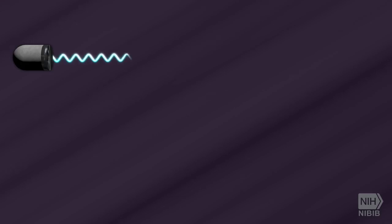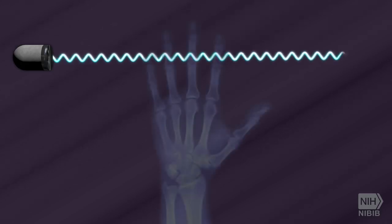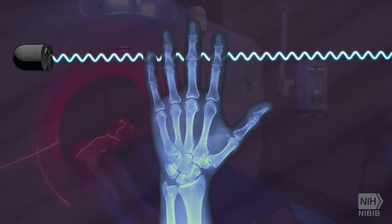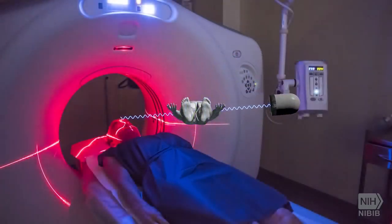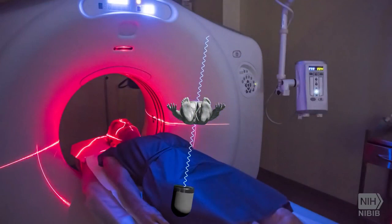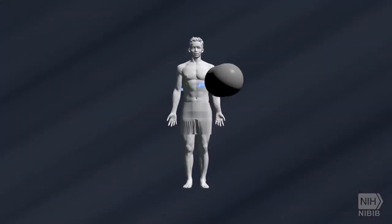A conventional X-ray uses a fixed tube that sends X-rays in only one direction. A 3D rendering of a tube appears and emits waves horizontally across an X-ray image of a hand. By contrast, a CT scanner uses a motorized X-ray source that shoots narrow beams of X-rays as it rotates around the patient, emitting X-rays at various angles.